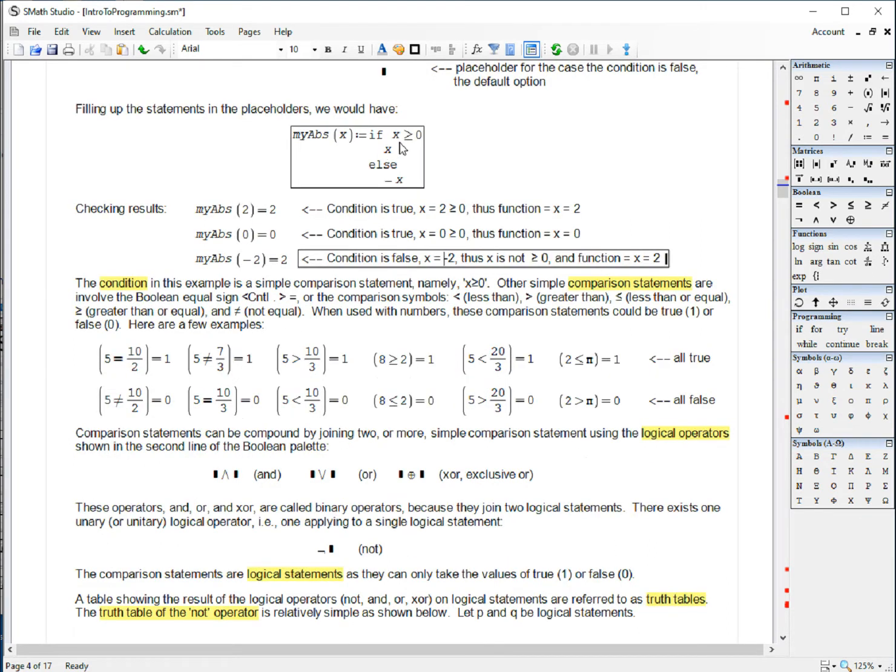Now, the conditions in the if, when we're dealing with numerical data, it's mostly comparison statements. Those comparison statements can be true or false. Here are some examples where, when I use the equal sign here, I'm using the boolean equal sign, which is going to be entered using control equal.